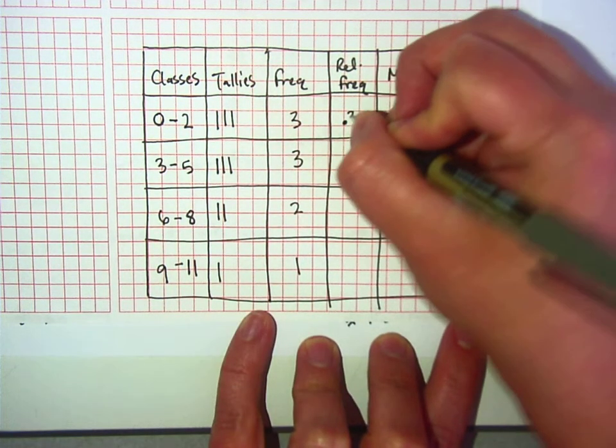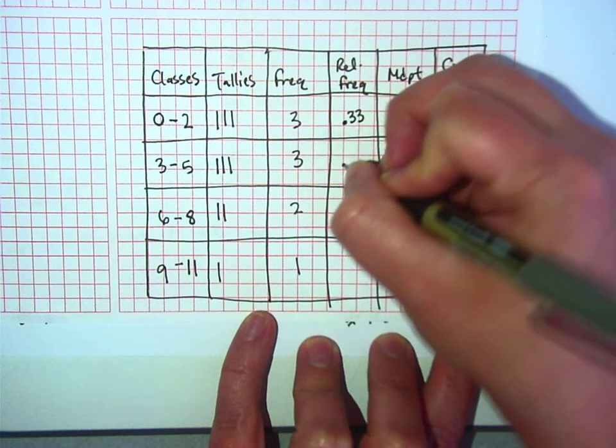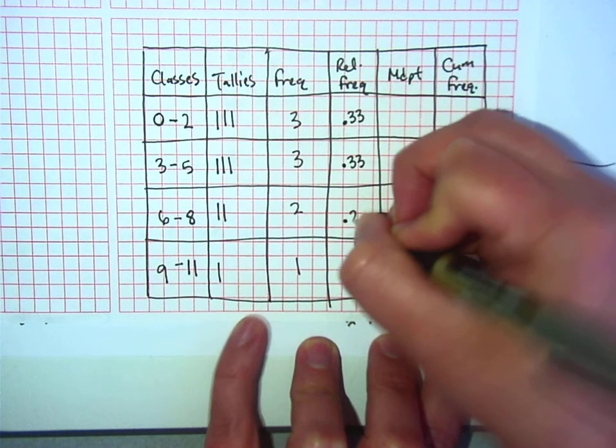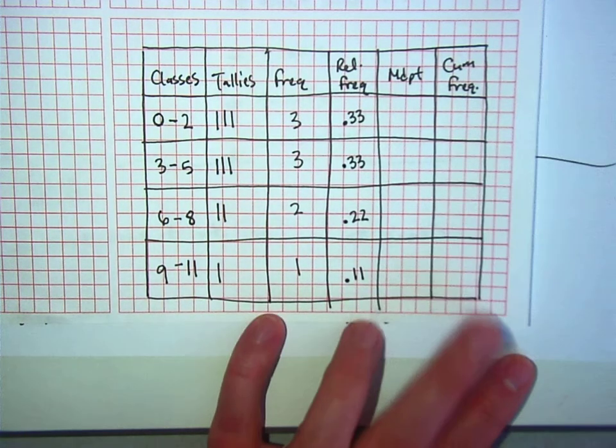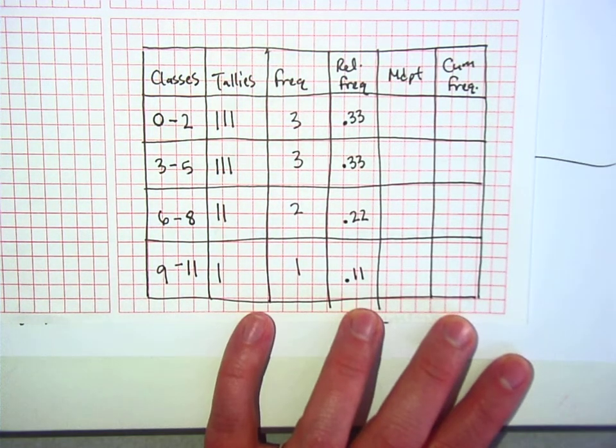So 3 ninths is 0.33, 0.33, 2 ninths is 0.22, 0.11, which adds up to 0.99? Pretty close.